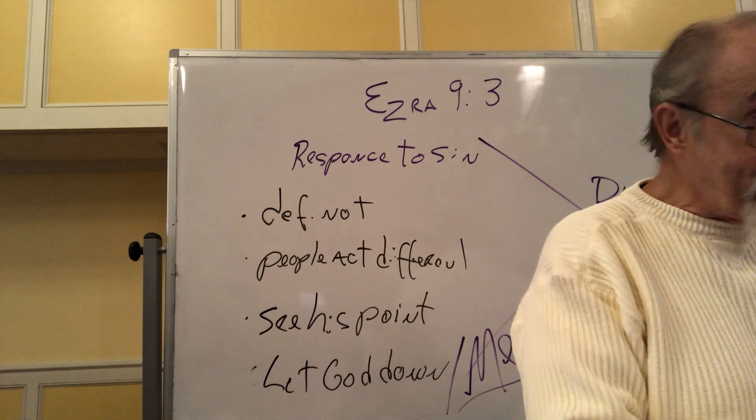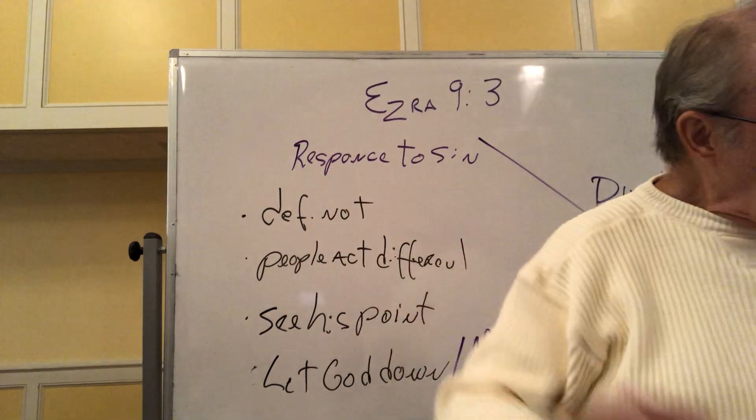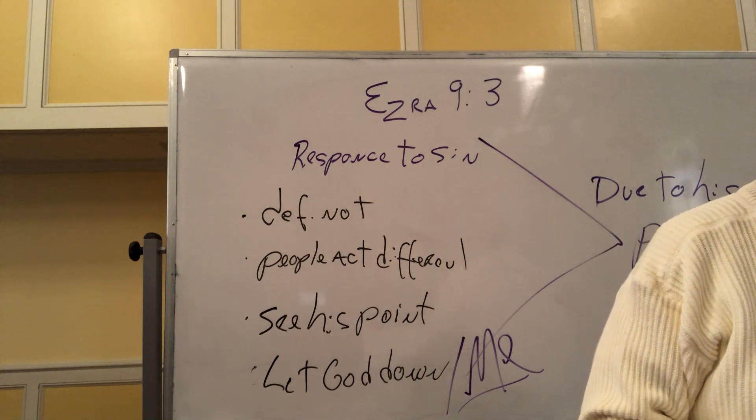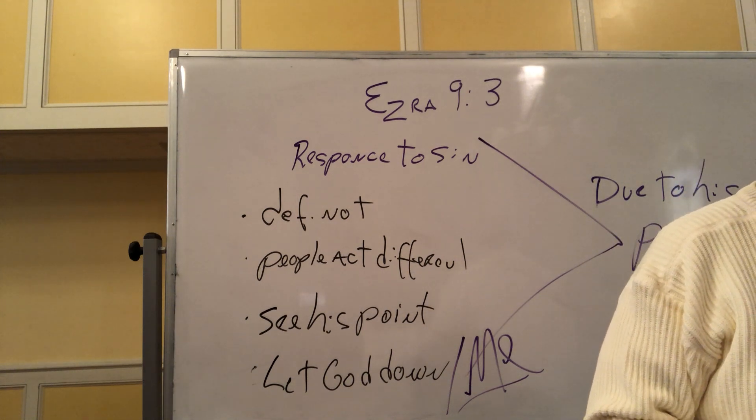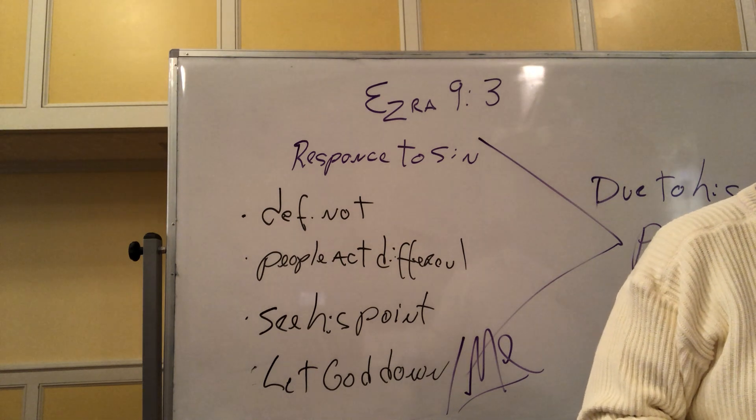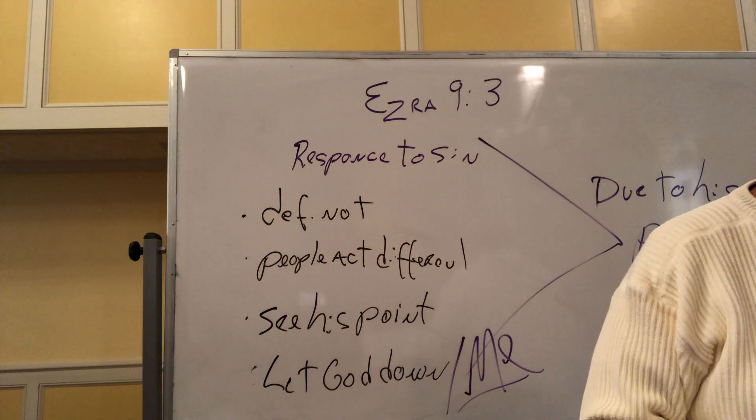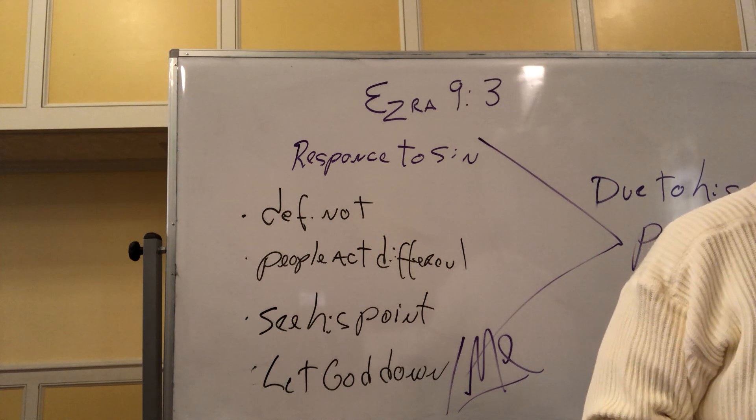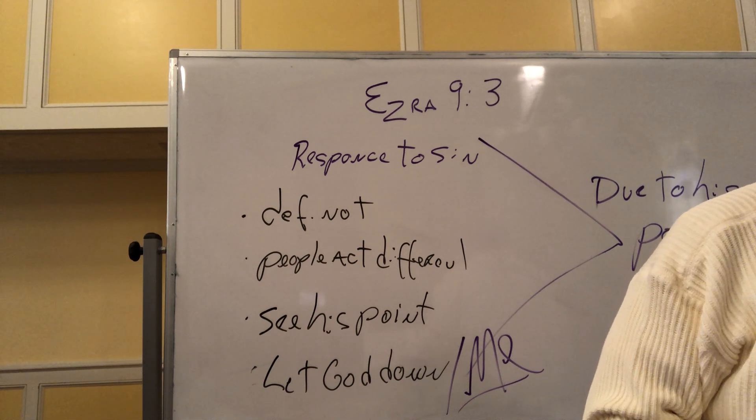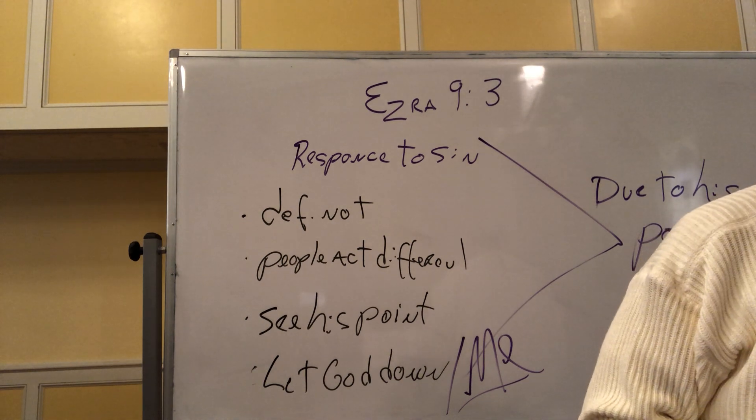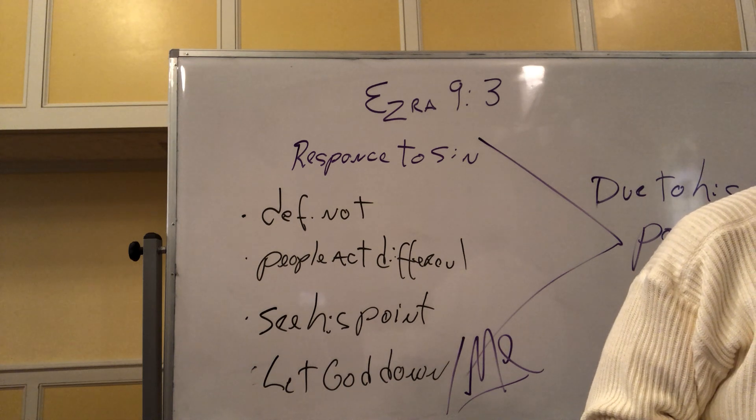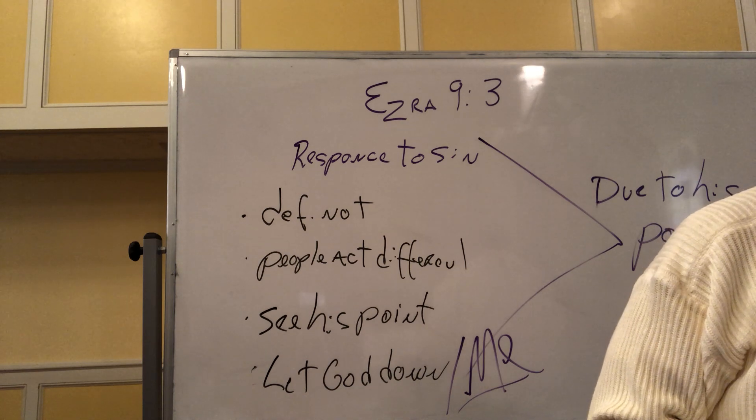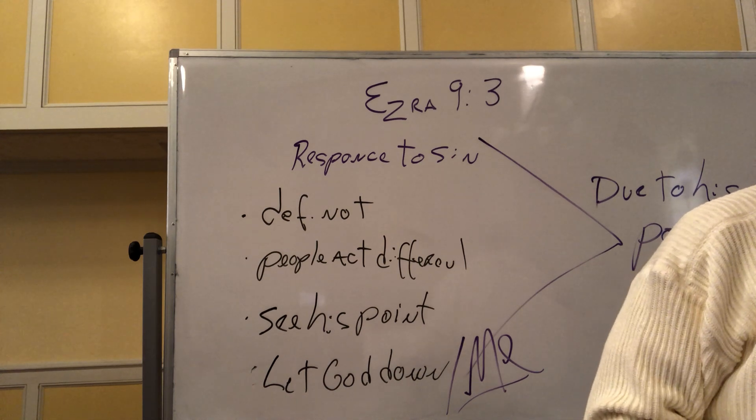I think that's important as we look about Ezra's response. But after Ezra made his demonstration, it says, then, verse 5, at the evening sacrifice. So, like I said, it evidently must have happened earlier in the day. At the time of the evening sacrifice, I rose from my self-abasement, his fasting, with my tunic and cloak torn, and fell on my knees with my hands spread out to the Lord my God and prayed. Oh, my God, I am too ashamed and disgraced to lift up my face to you, my God, because our sins are higher than our heads, and our guilt has reached to the heavens. From the days of our forefathers until now, our guilt has been great because of our sins. We and our kings and our priests have been subjected to the sword in captivity, to pillage and humiliation at the hand of foreign kings, as it is today.